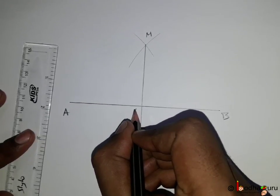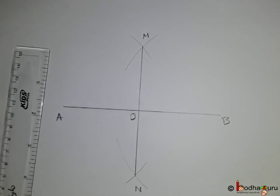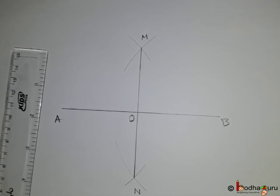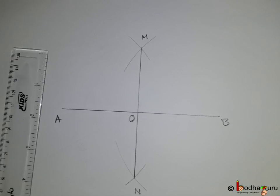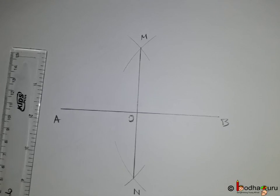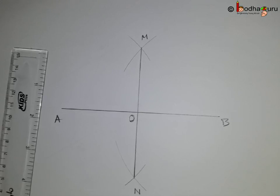This means the point where the line intersects AB, that is point O, is the midpoint of line segment AB. That is, the length of line segment AO is equal to the length of line segment OB.